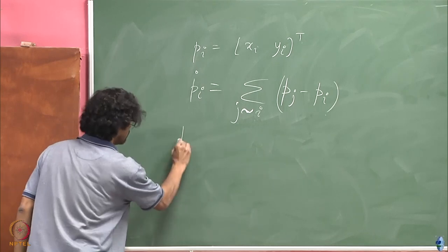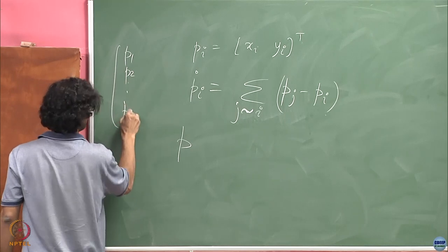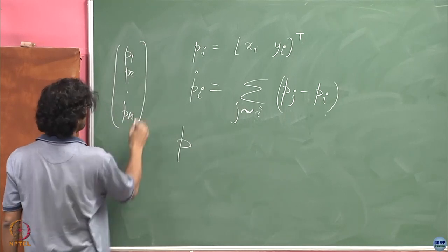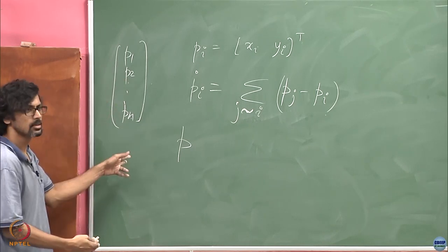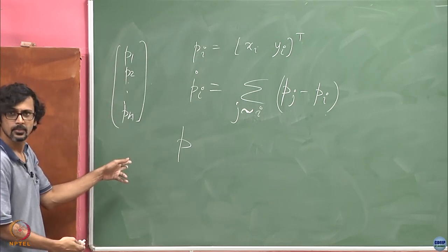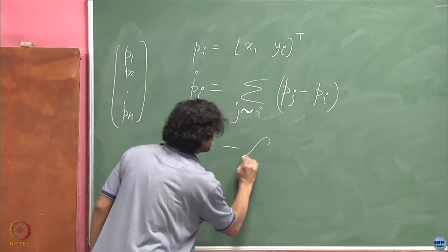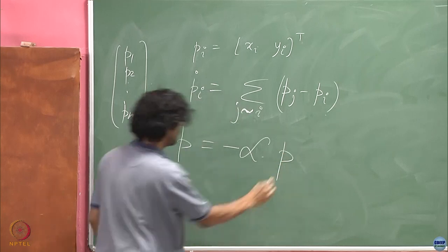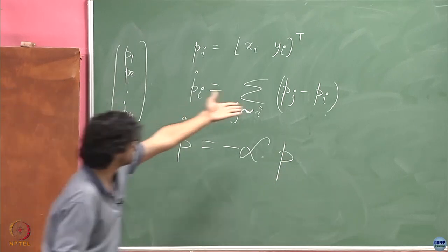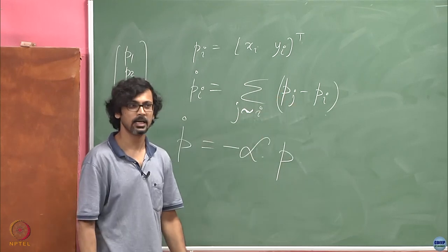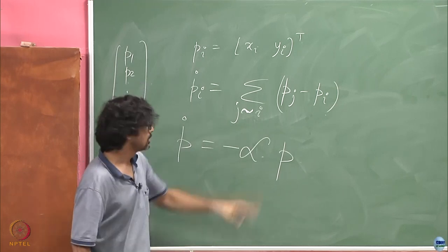I put it to you that if I stack up all these p_i's together like p_1, p_2, until p_n, this is a stacked up position of all the n agents, this is a 2n sized vector. Then what is this? p dot isn't it equal to minus Laplacian times p? Because this is what the Laplacian is, that is why we were so invested in the Laplacian, it helps us in grasping this idea.